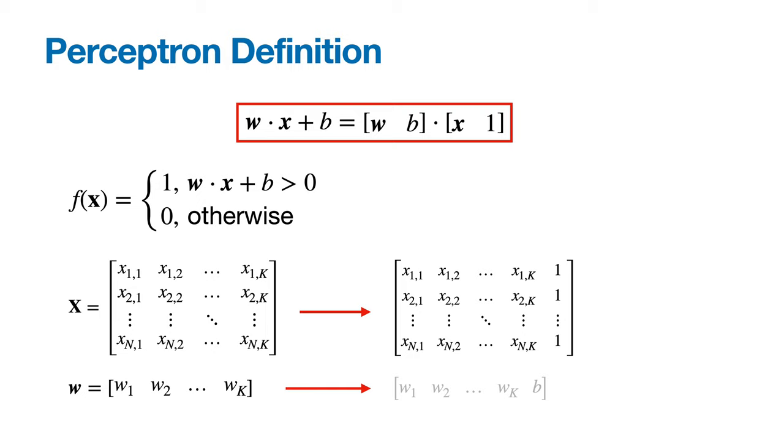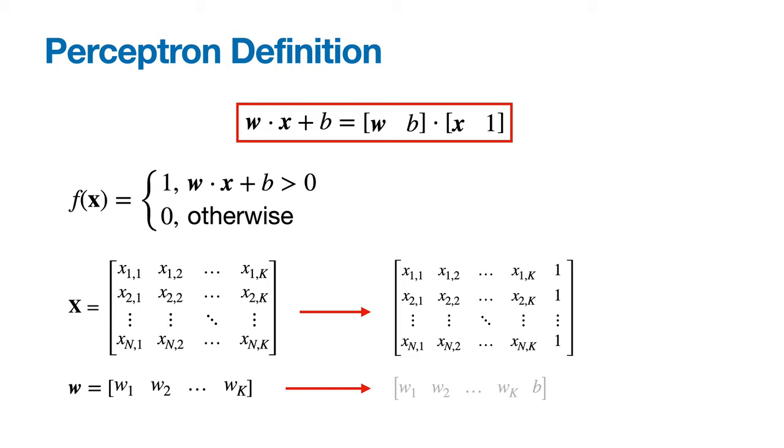So if we tack on a column of ones at the end of our feature matrix x, and we tack on b to our weight vector w, we can redefine our perceptron as f equals the piecewise function, where we predict 1 if w dot x is greater than 0, and 0 otherwise. Now our separating hyperplane is defined entirely in terms of our weight vector w.